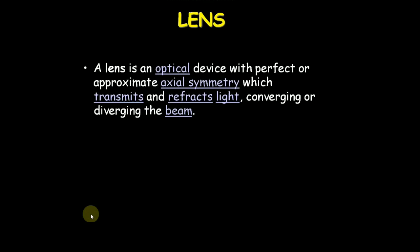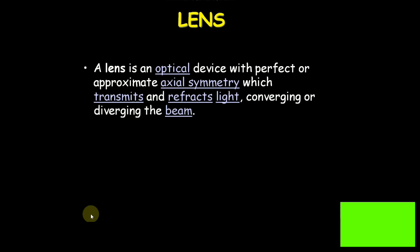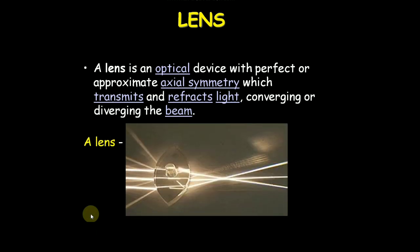Lens. A lens is an optical device with perfect or approximate axial symmetry which transmits and reflects light, converging or diverging the beam. You are seeing the lens.